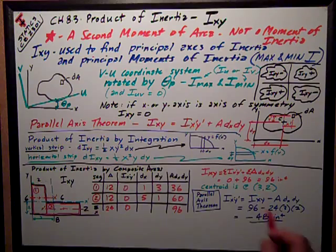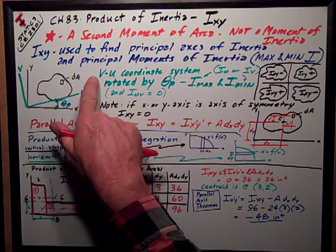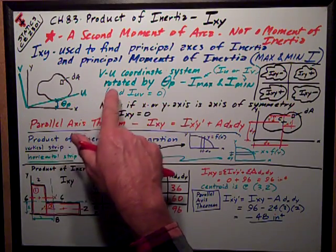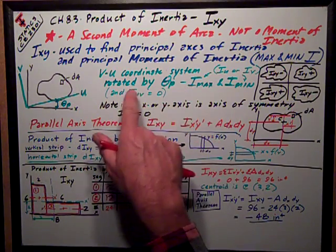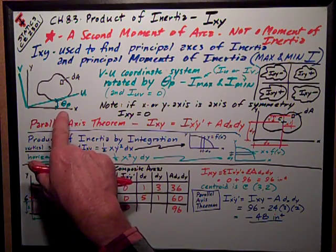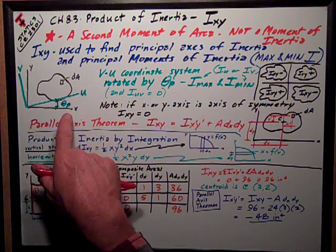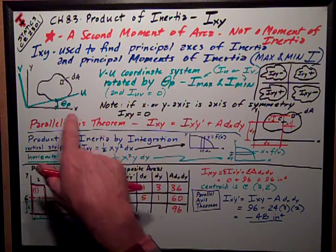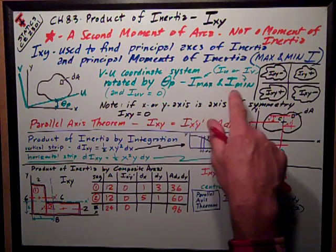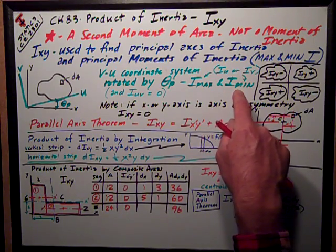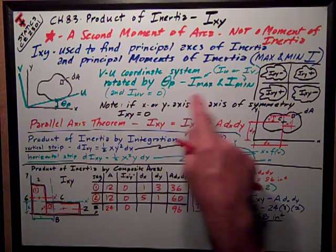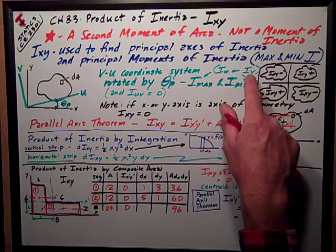we have to realize that there exists another coordinate system, which we'll call V and U, where that is rotated from X and Y coordinate system by this angle theta P, or principal. Theta P is the principal angle where I can get a maximum moment of inertia and a minimum moment of inertia, which at that coordinate system, rotated by that amount, I would call IU or IV.